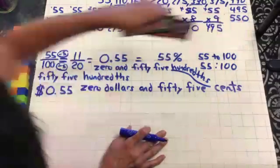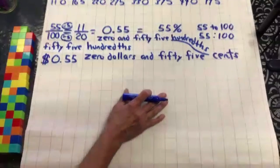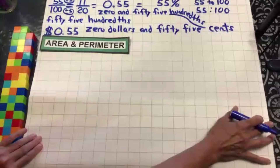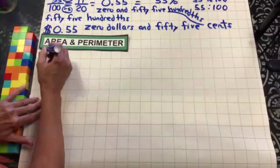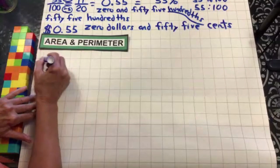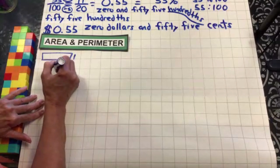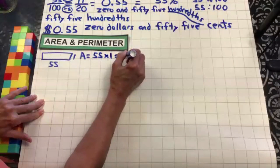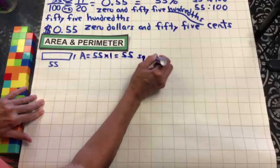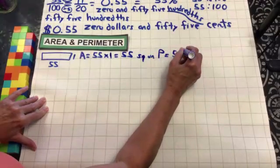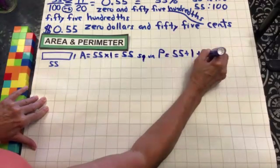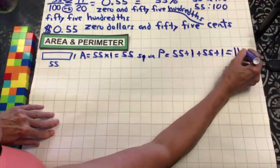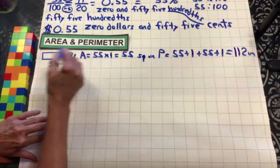Let's move on to area. We only have two factor pairs, so we might be able to do all the work here. Starting with 55 by 1: area A equals 55 times 1, which equals 55 square units. Perimeter would be 55 plus 1 plus 55 plus 1 — two 55s is 110, plus two more gives us 112 units.